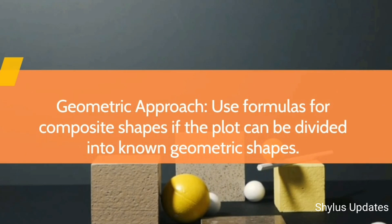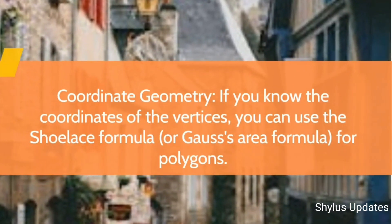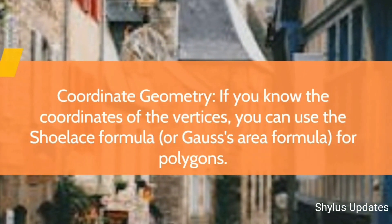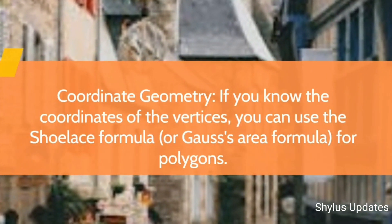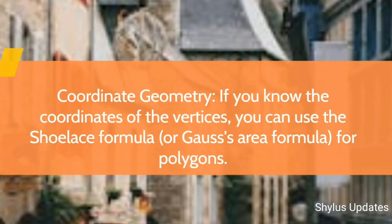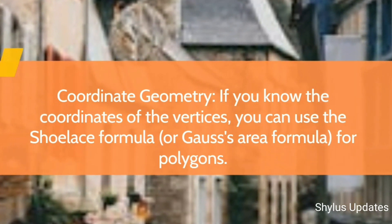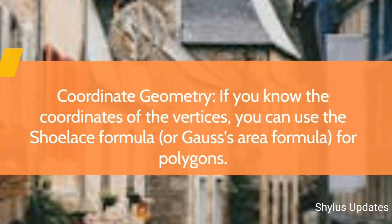Geometric approach: use formulas for composite shapes if the plot can be divided into known geometric shapes. Coordinate geometry: if you know the coordinates of the vertices, you can use the Shoelace formula, also known as Gauss's area formula, for polygons.